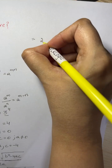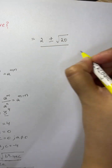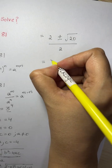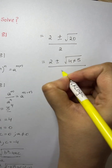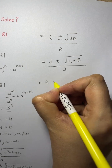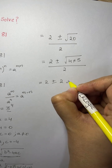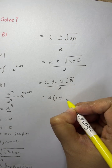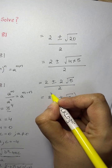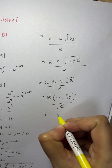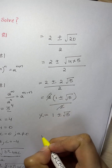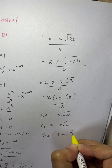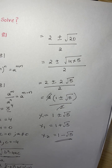We can write 20 as 4 times 5, so the square root of 20 is 2 root 5. This gives us 2 plus or minus 2 root 5 over 2. Taking 2 as a common factor, we get 1 plus or minus root 5, and the 2s cancel. So x equals 1 plus or minus square root of 5. The first value of x is 1 plus square root of 5, and the second is 1 minus square root of 5. Those are the two solutions.